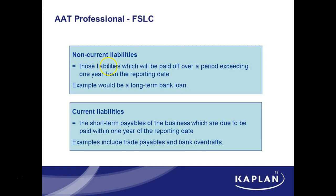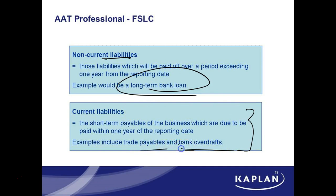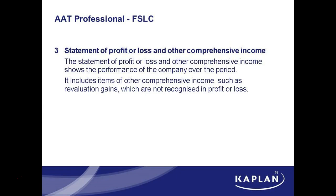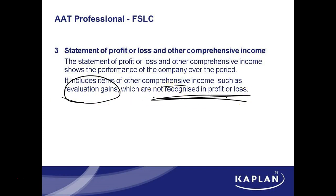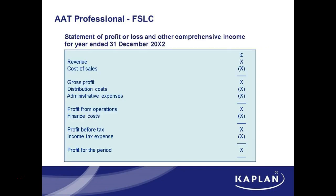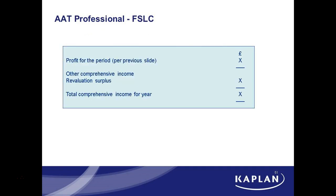Non-current liabilities — long-term loans. Current liabilities — short-term: trade payables, bank overdrafts, things like that. And as I already said, typically what they're calling other comprehensive income in our syllabus is just the valuation gains — and we don't recognize that in the profit or loss because it has nothing to do with trade. We've already seen this — I think this is just doing a final definition.